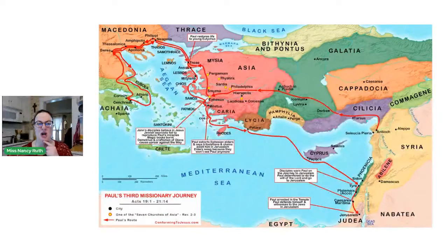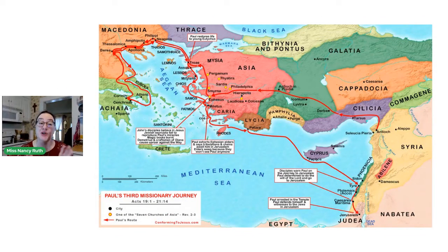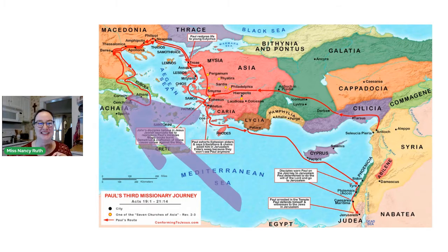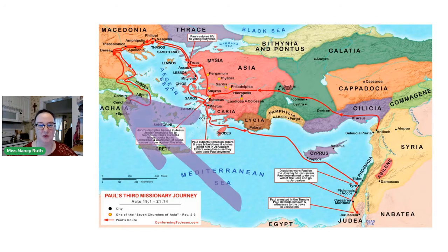If you want to practice with that song, you can look for it in our videos. During the time when the book of Romans was written, Paul was on his third missionary journey. This is a map of his third missionary journey, and he was in Corinth — located in Greece. So Paul was writing from Corinth to the Romans.